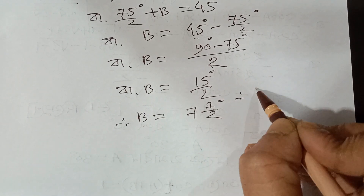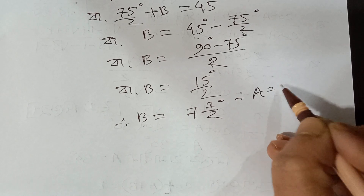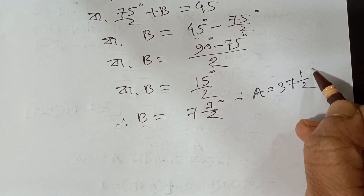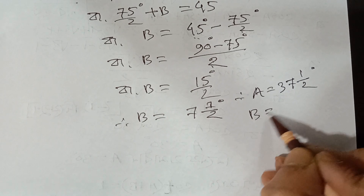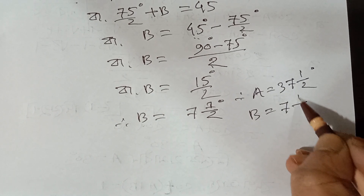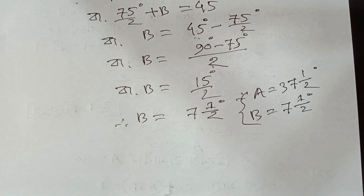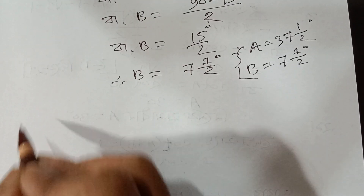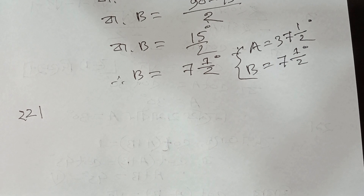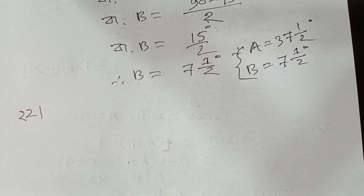A is the answer. A is equal to r. 2.3 — 1.2 degrees. Next number 22. 22 number.